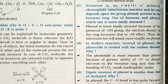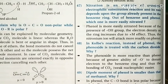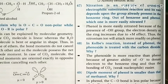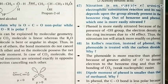Question 47: Nitration is an example of aromatic electrophilic substitution. Out of benzene and phenol, which is more easily nitrated? The rate of electrophilic substitution depends on the electron density in the aromatic ring. The OH group in phenol increases electron density at ortho and para positions by positive resonance effect. So electron density is higher in phenol than in benzene; therefore, phenol is more easily nitrated than benzene.